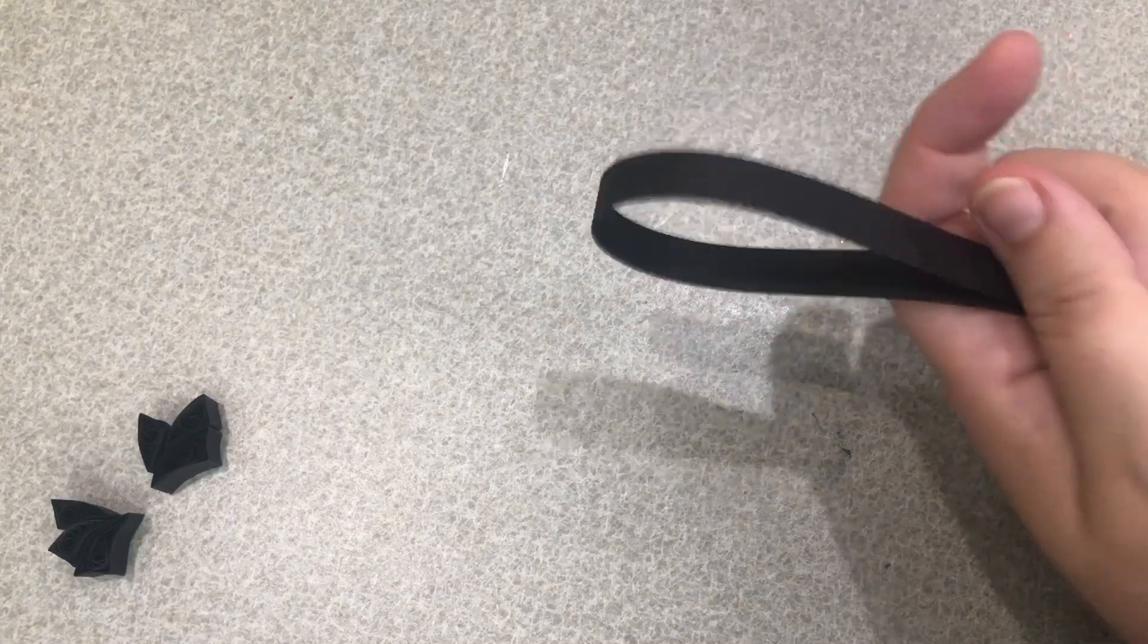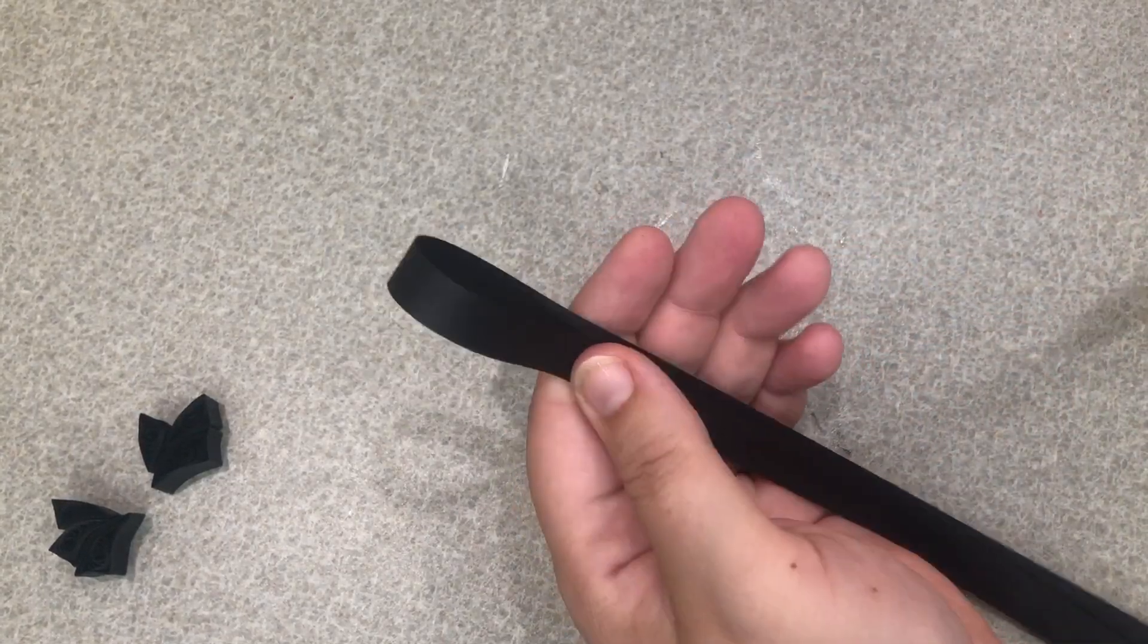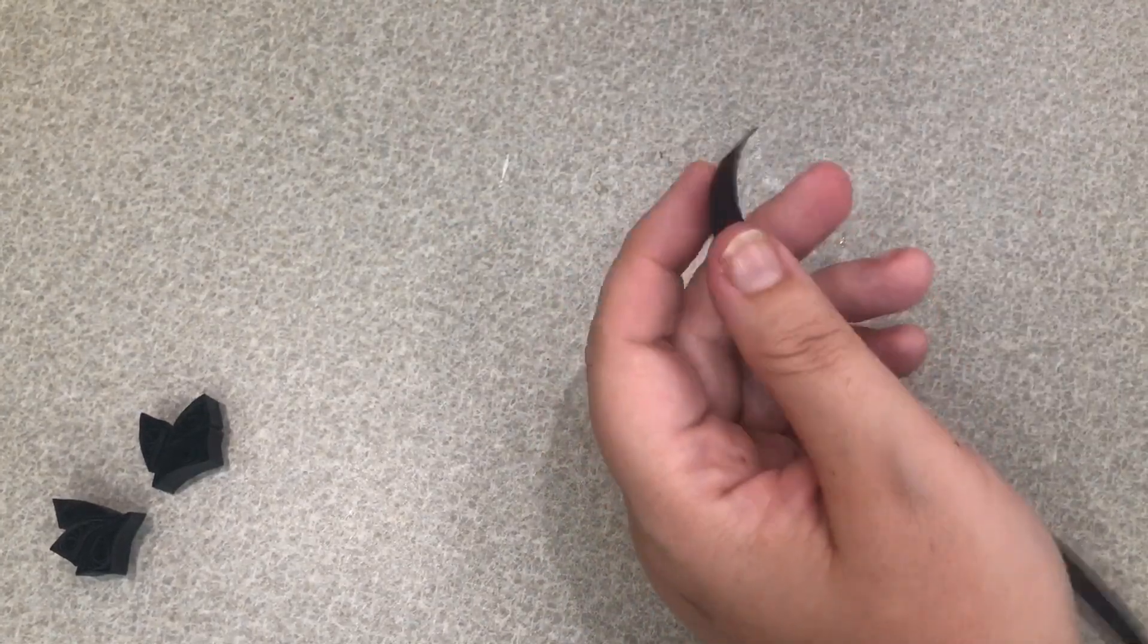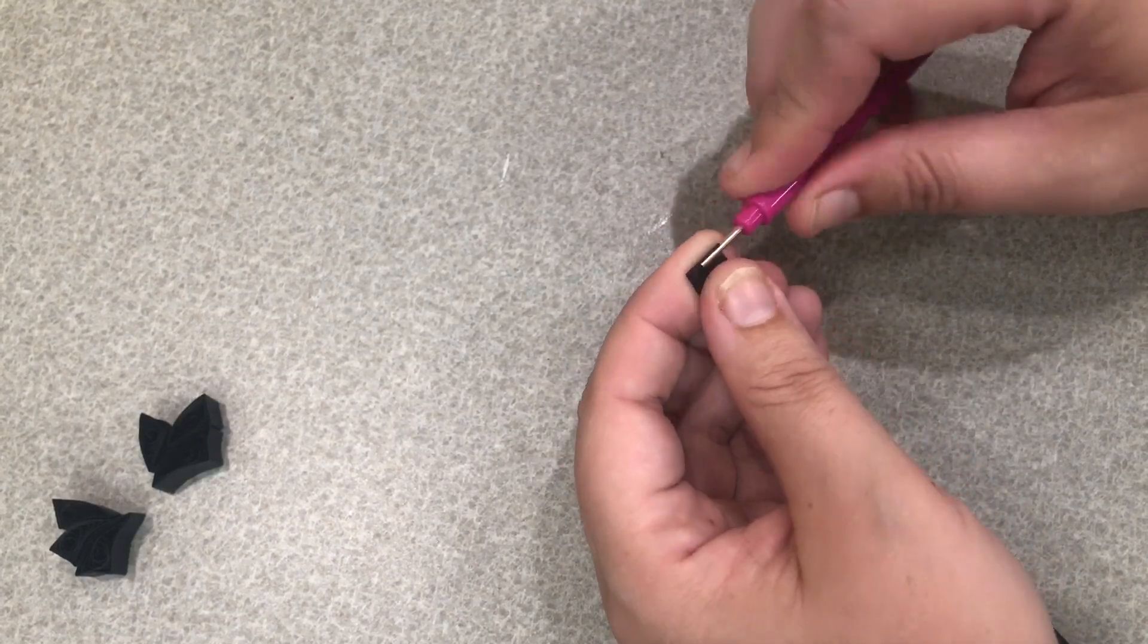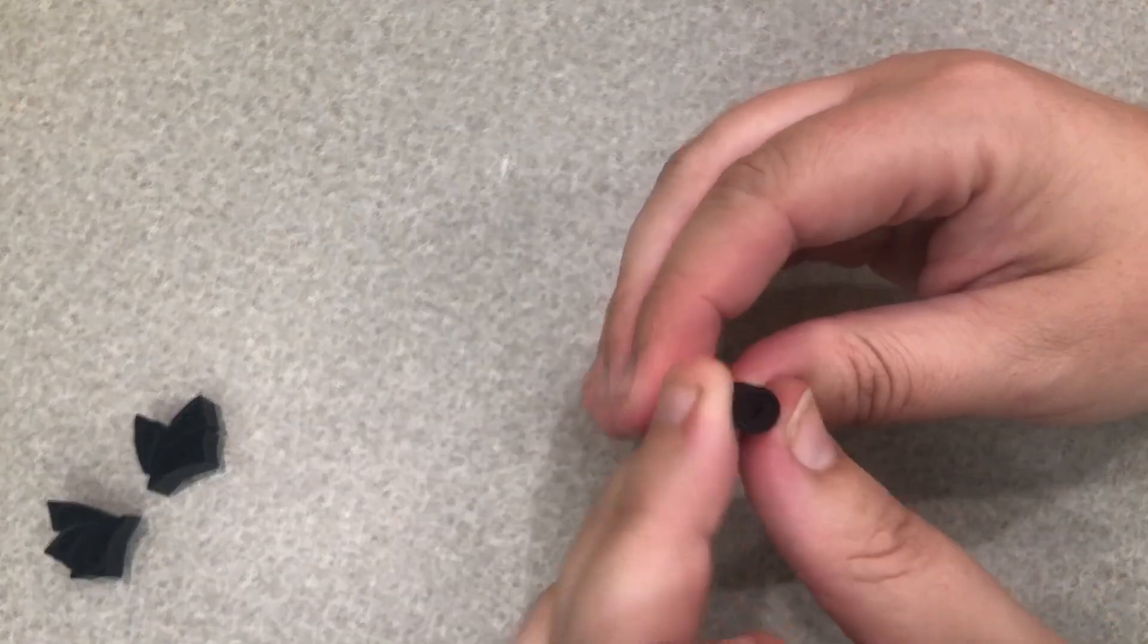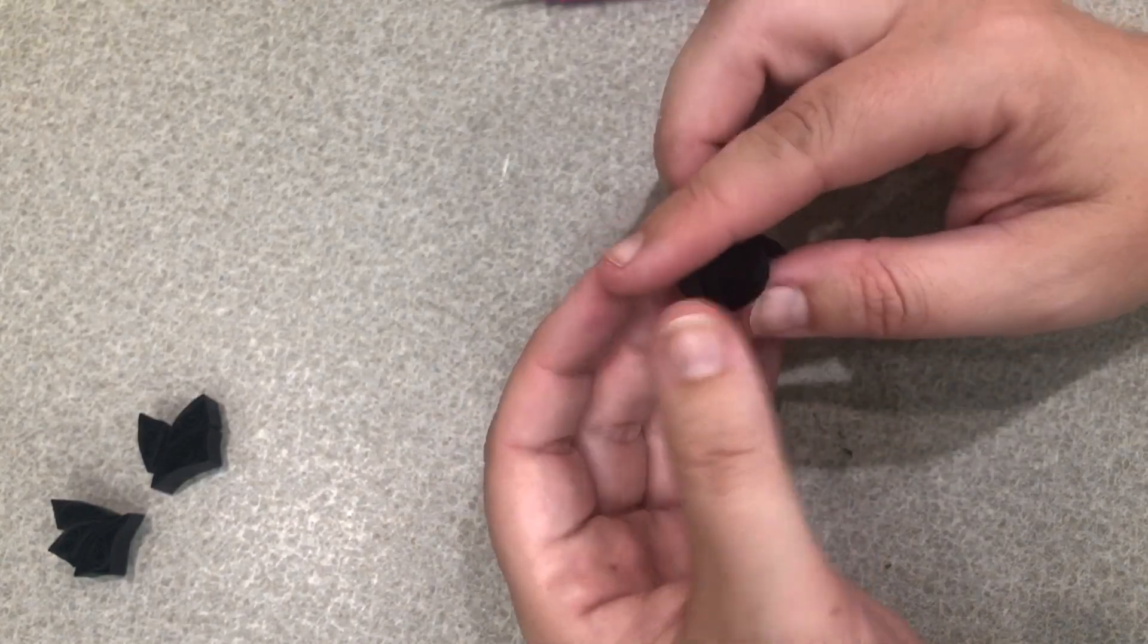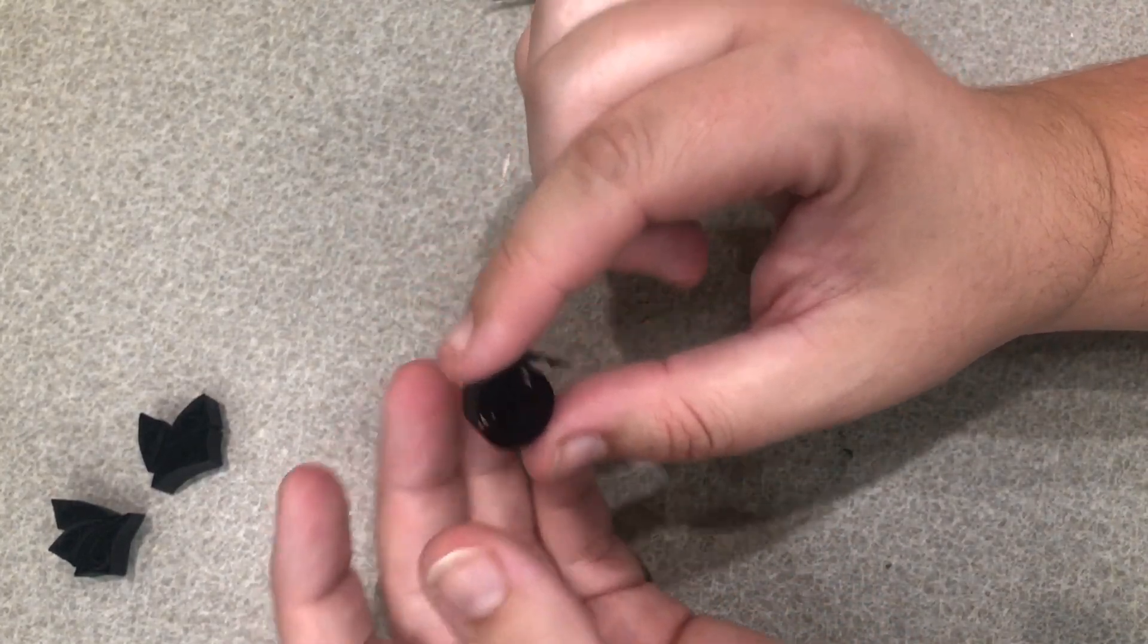So once we have both of our wings done, we are done with the hardest part of our bat. We're going to take another black strip and cut it in half. We're going to roll one half up into a circle. Once it's rolled up, we'll let it go.